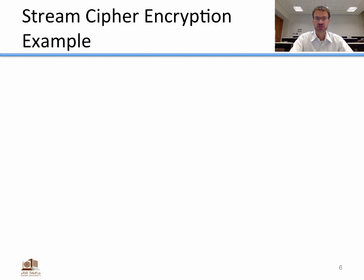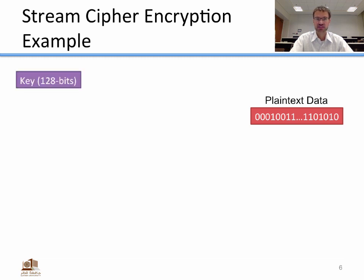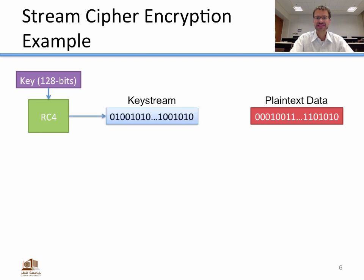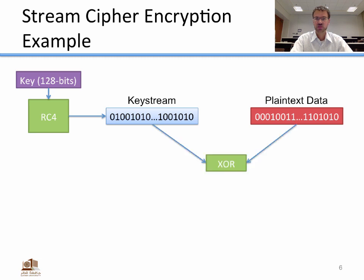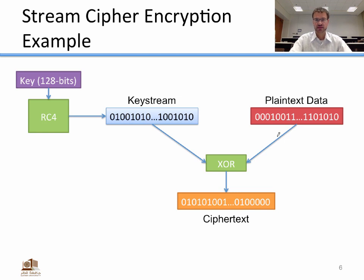Let's do a stream cipher encryption example. We have some plain text data and a 128-bit key. We feed that key into our stream cipher — in this case RC4 — which produces a key stream: a potentially infinitely long string of ones and zeros. We produce enough key stream to match the length of our plain text, then exclusive OR those together to get the cipher text. So: cipher text equals key stream exclusive OR'd with the plain text.